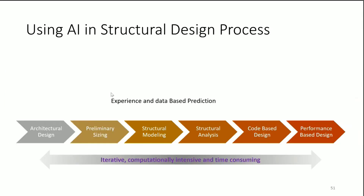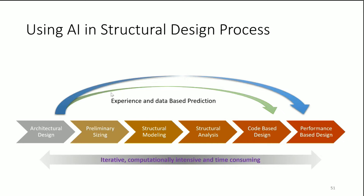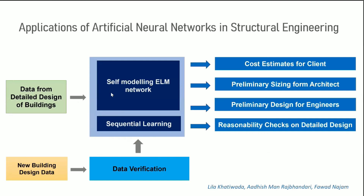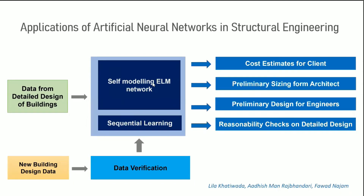The first application is using AI in the structural design process. This was the first application we did, where a couple of students worked on it and did a really good job, because we were working on many real projects. So we had real data from the design — both from the code-based design and from the performance-based design. We collected about 80 to 100 buildings at that time and decided to use that data to generate an AI tool.